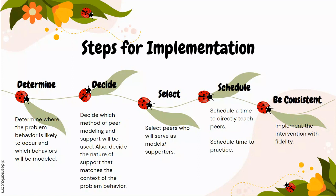Third, select peers who will serve as models and supporters. The peers should be preferred peers of the target student, as well as peers who are caring and empathetic. Fourth, schedule a time to directly teach the peers the script and plan. The initial teaching should occur without the target peer.